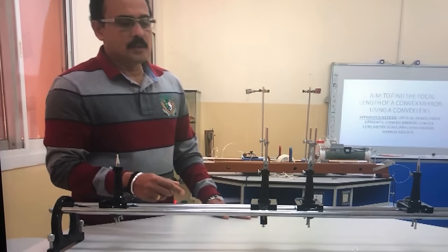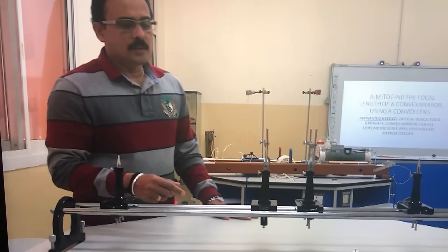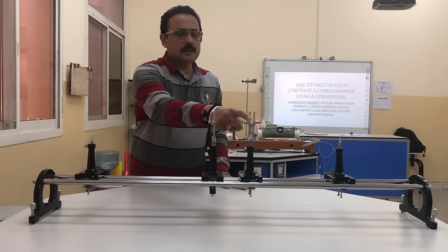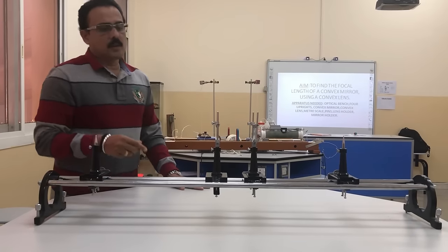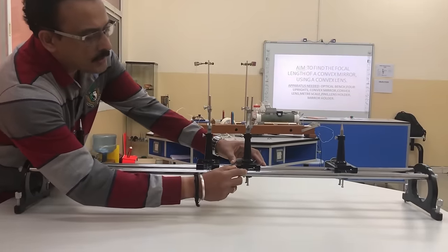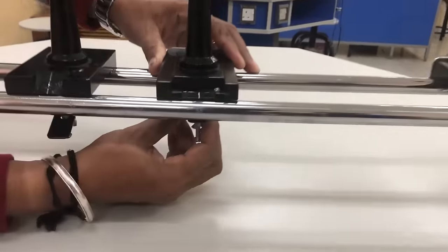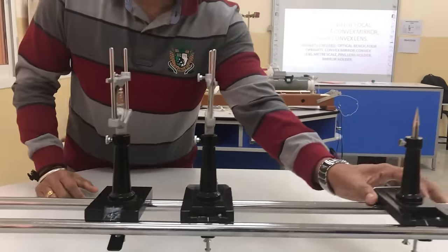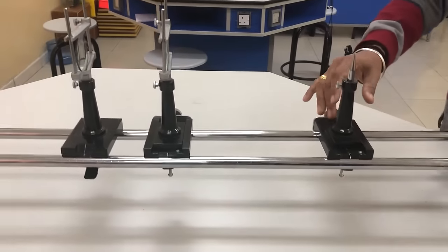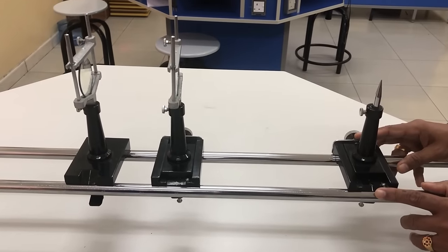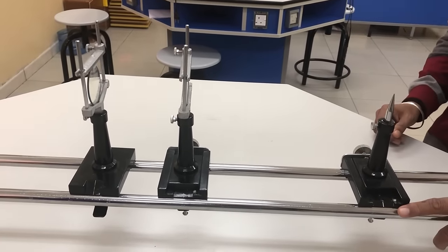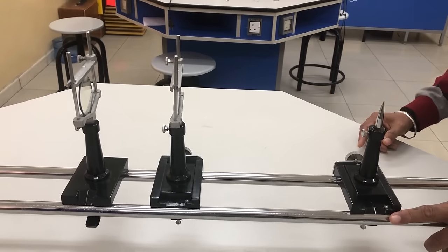The convex mirror is placed at a marking of 42.8 centimeter on the optical bench. After finding the rough focal length of the convex lens, place it on the optical bench — here it has been fixed at a marking of 55 centimeter. Secure the upright with the lens holder by tightening the screw. Now keep the object pin in the upright at a distance of 1.5 times the rough focal length of the convex lens. The rough focal length was 18.5 cm, so 1.5 times that is 27.5 centimeter.